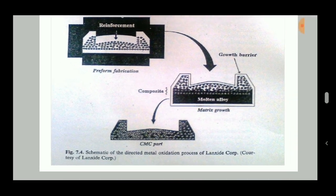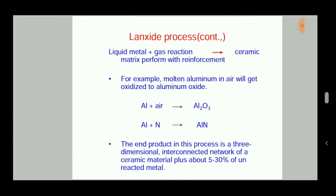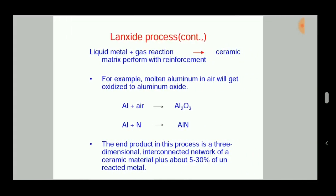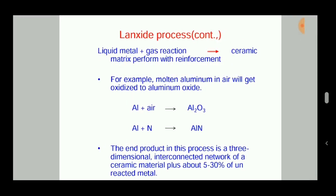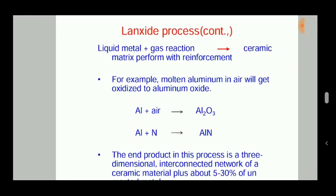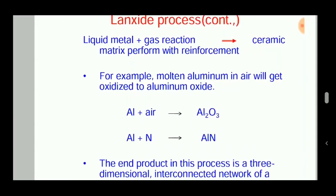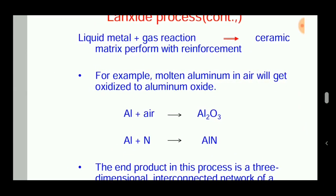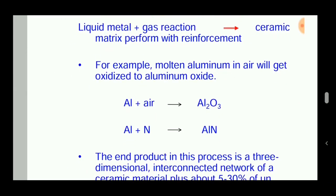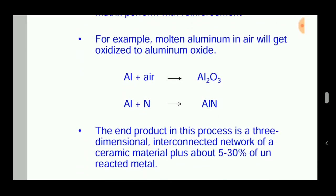The liquid metal plus gas reaction gives the ceramic matrix preform with reinforcement. For example, aluminium reacts with air to give aluminium oxide (Al₂O₃), and aluminium reacts with nitrogen to give aluminium nitride (AlN).